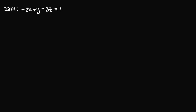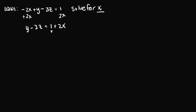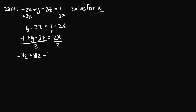Since x is first, I'll solve for x. The first thing I can do is take the negative 2x term and bring it over to the other side by adding 2x to both sides. We get y minus 3z equals 1 plus 2x. Then I subtract 1 from both sides to get negative 1 plus y minus 3z equals 2x. Finally, dividing both sides by 2 gives x equals negative one-half plus y over 2 minus three-halves z. So now we have x in terms of y and z.